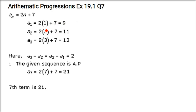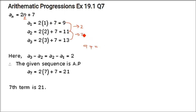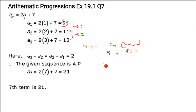The nth term is given as aₙ = 2n + 7. Show that it is an AP and find the 7th term. Put n=1: 2(1)+7 = 9. Put n=2: 2(2)+7 = 11. Put n=3: 2(3)+7 = 13. Since 11-9 = 2 and 13-11 = 2, it is in AP with common difference 2. For a₇: a + (n-1)d = 9 + (6)(2) = 9 + 12 = 21.